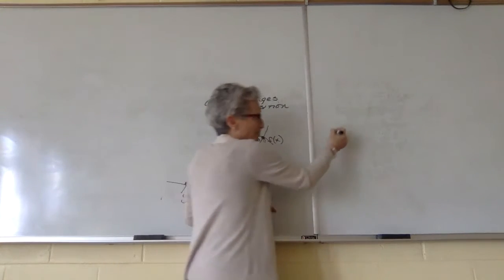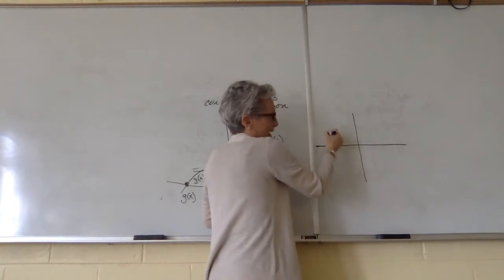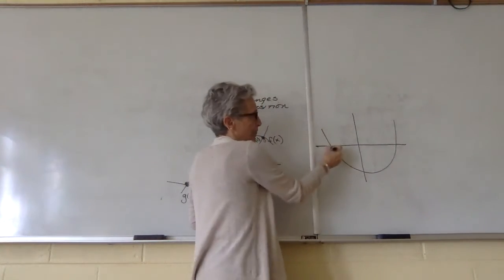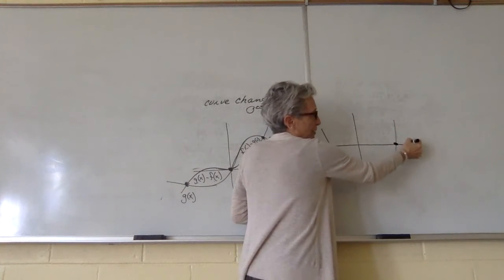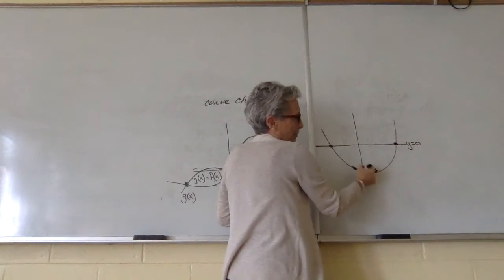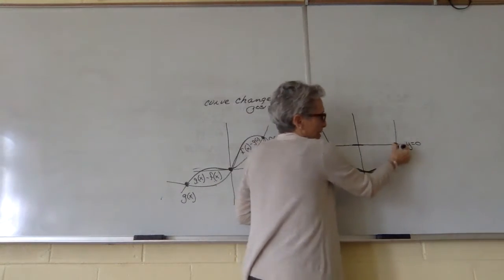The other example that you might have to think about a little bit is if you're finding area and it looks like this. In this case, your top curve is going to be the line Y equals zero, and this would be your bottom curve. So you would be saying zero minus the bottom curve.